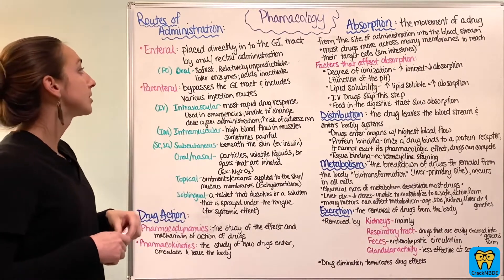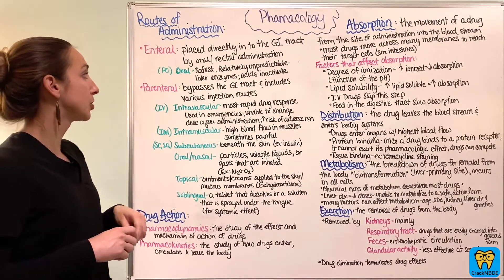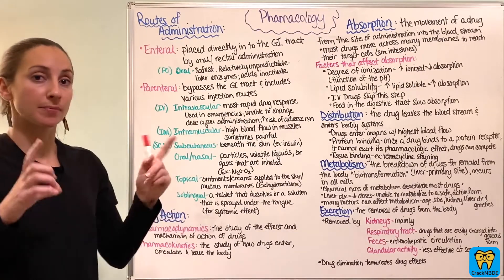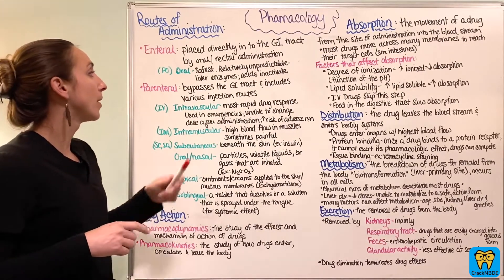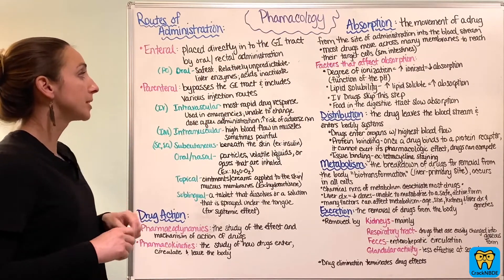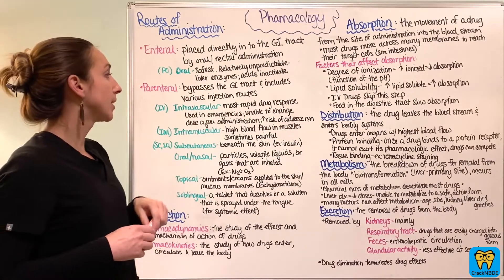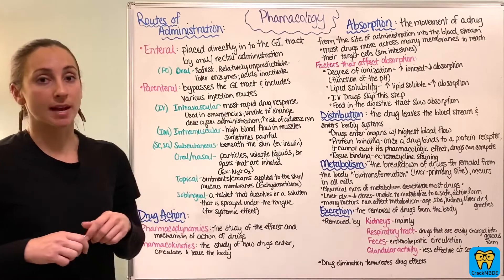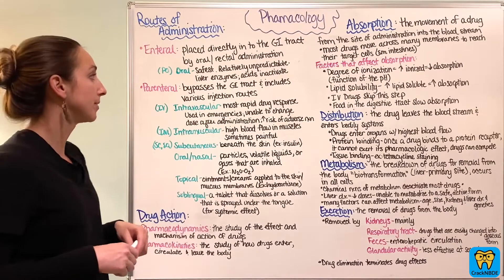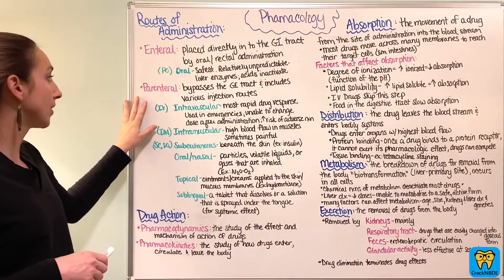Enteral means placed directly in the GI tract by oral or rectal administration. More commonly you'll see oral, which we see as PO. Now we know that it's relatively unpredictable, however it is the safest. We use liver enzymes and the acids will inactivate the pharmacological effects. Then we also have parenteral.